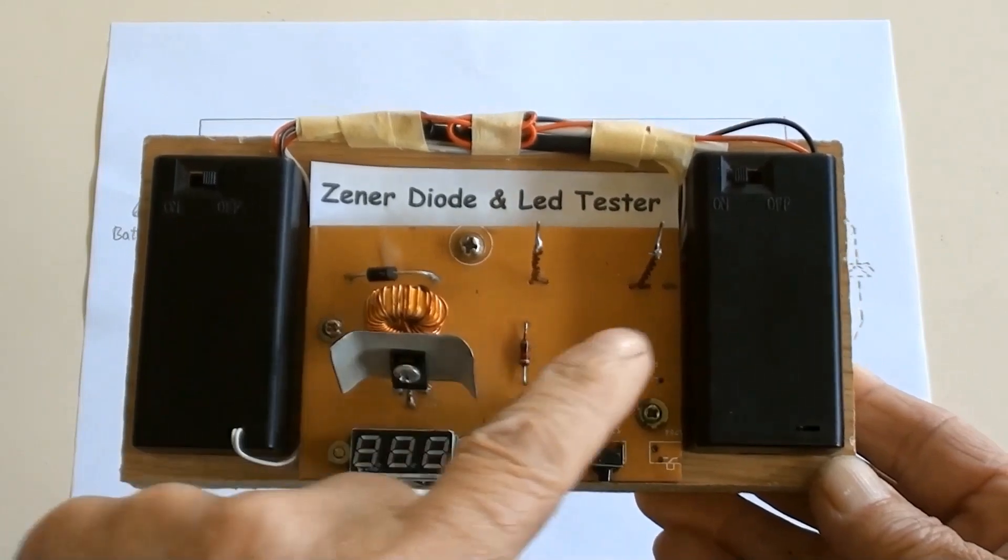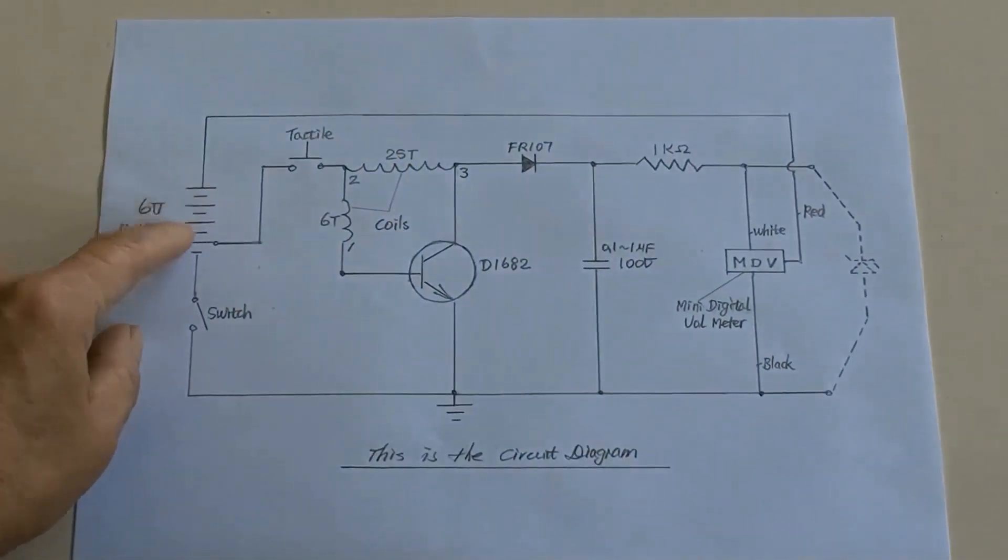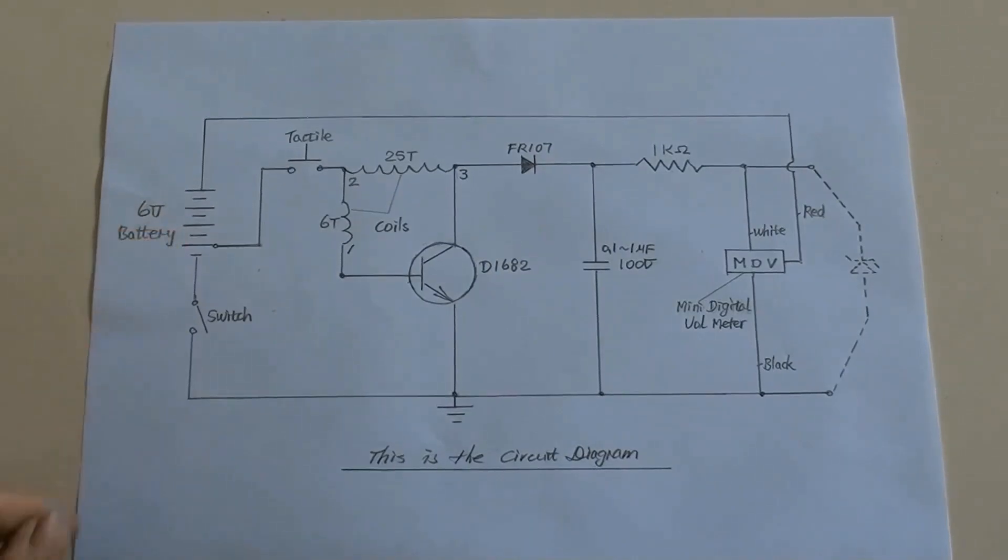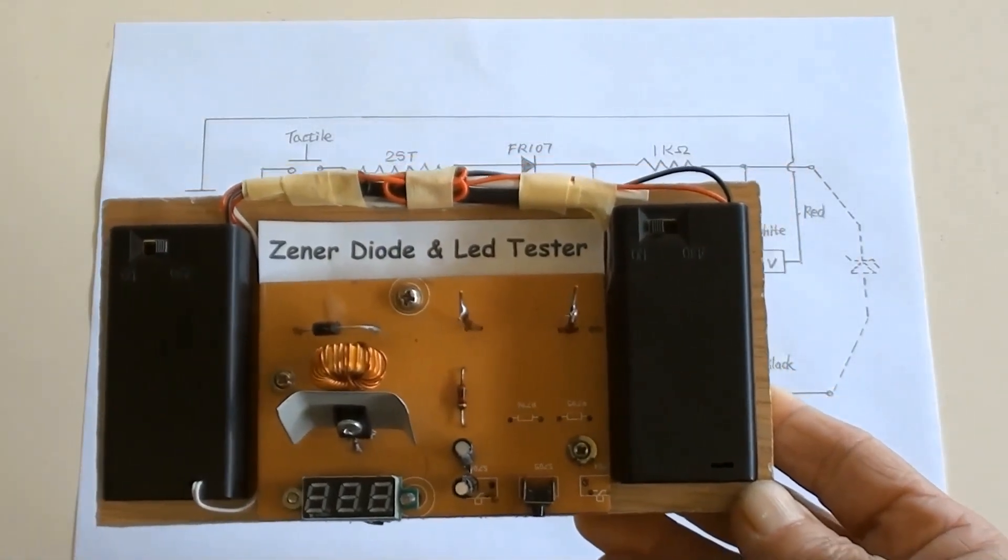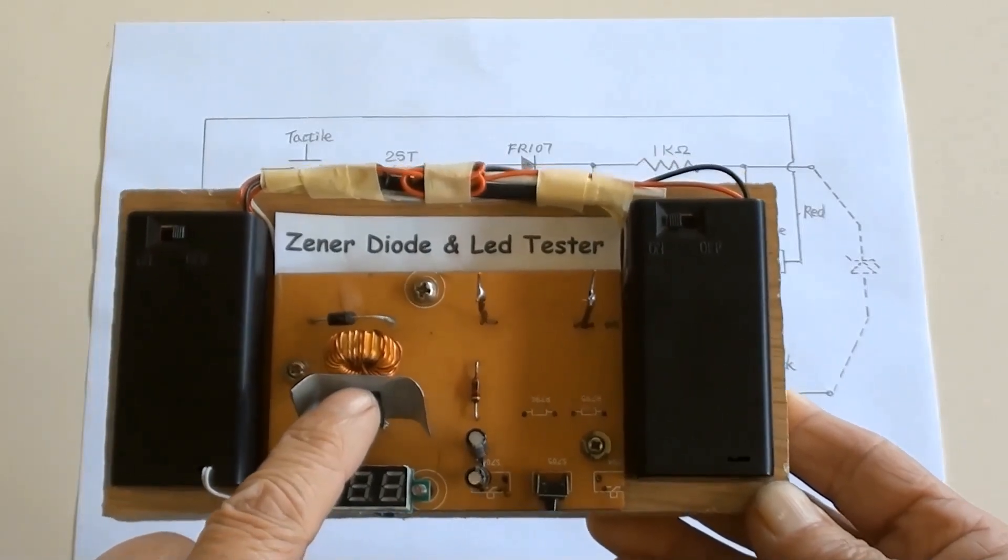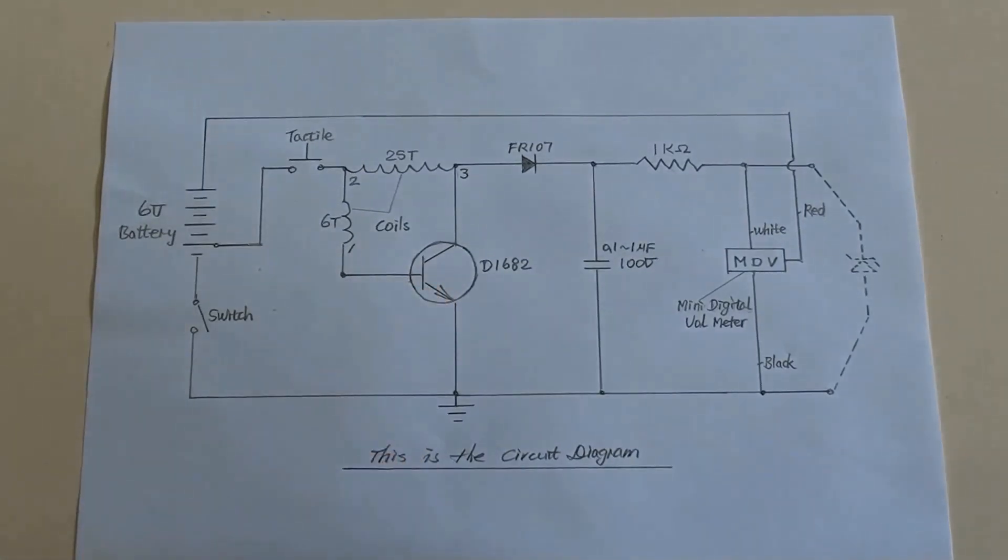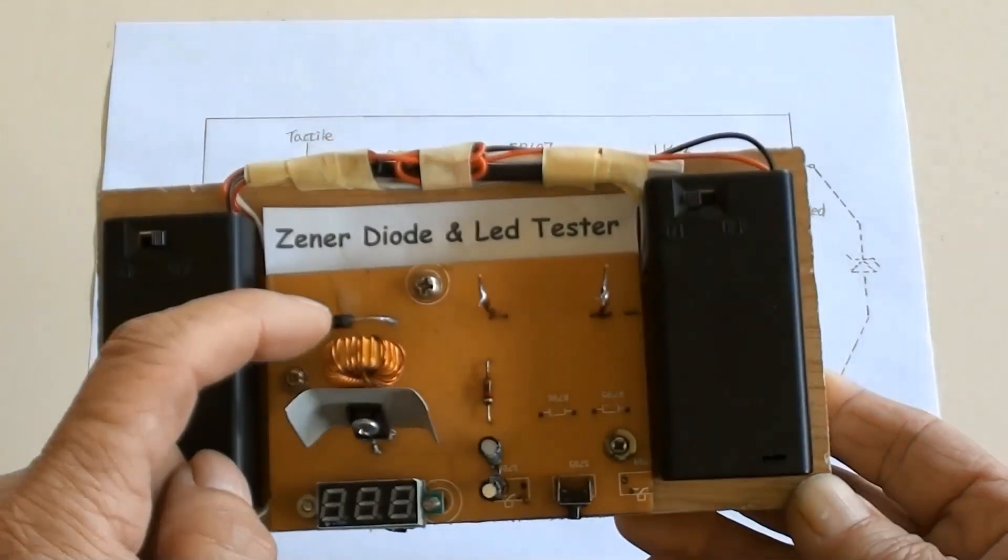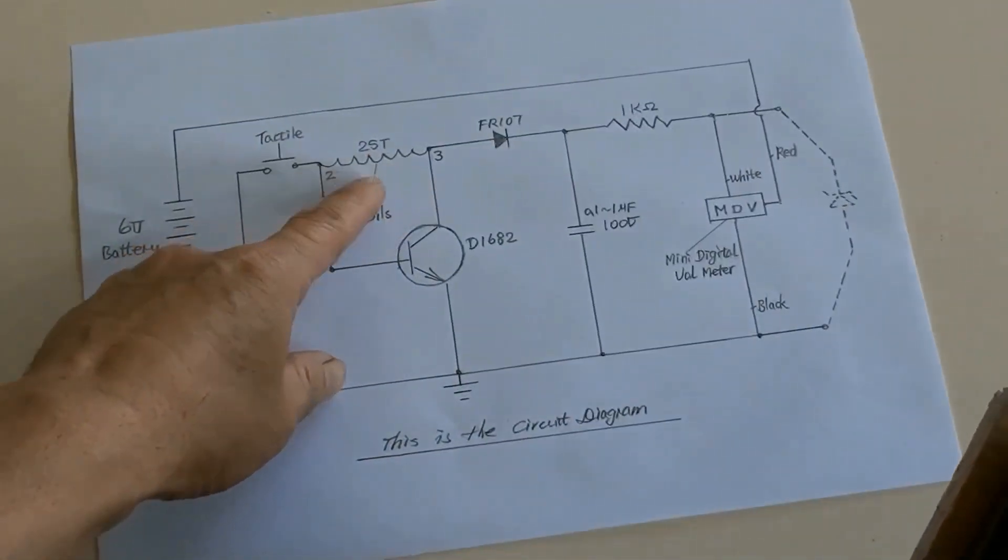Two AA battery packs are here, and shown there in the diagram. A transistor, type D1682, is shown here in the diagram. The coils or inductor just behind the transistor is shown there in the diagram.